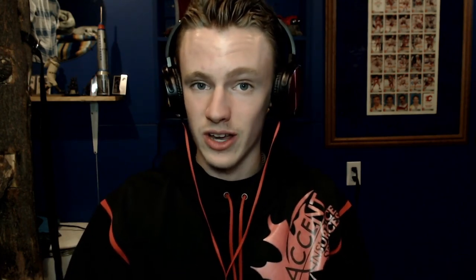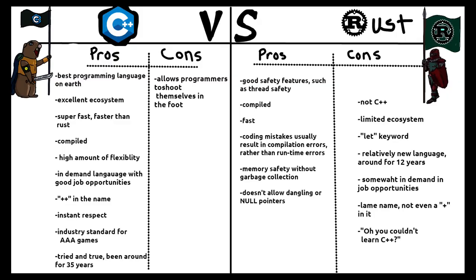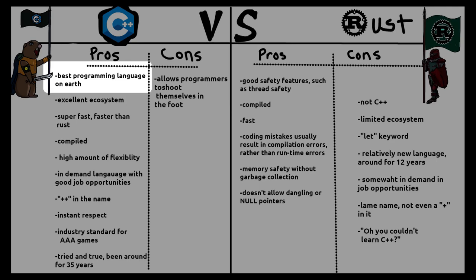Rust is a programming language very similar to C++. In fact, a lot of the syntax is really the same. I've taken the liberty of preparing yet another wonderful, completely objective and unbiased data sheet. The first thing we see is there are a lot of pros for C++ and not a lot of cons, and with Rust it's kind of mixed. So as I said before — completely unbiased and objective.